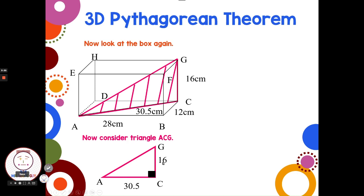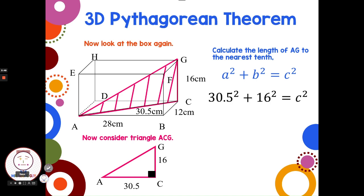It's like having a leg of 16, that's from G to C, and a leg of AC of 30.5. So we'll use the Pythagorean theorem again, a squared plus b squared equals c squared. We'll put in our two legs, 30.5 and 16, and those are interchangeable. And we're finding the hypotenuse of c.